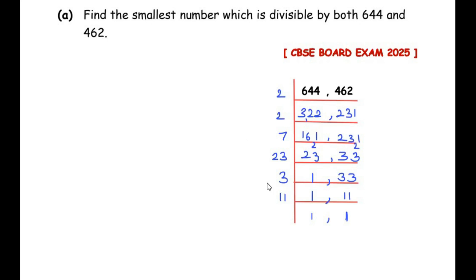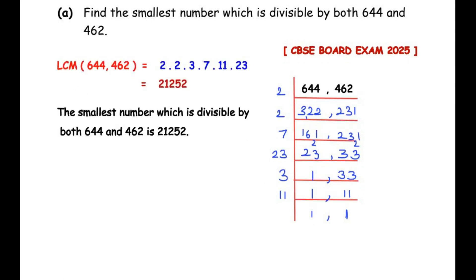The lowest common multiple of 644 and 462 is the product of all the factors we found: 2 × 2 × 3 × 7 × 11 × 23. When you multiply all these numbers you get the LCM as 21,252. This is the smallest number which is perfectly divisible by both 644 and 462. So our answer is 21,252. Now let us move on to the OR question.